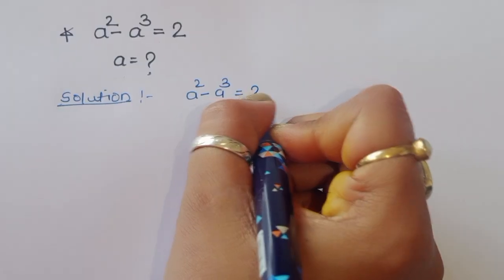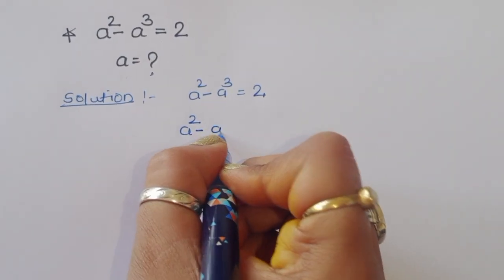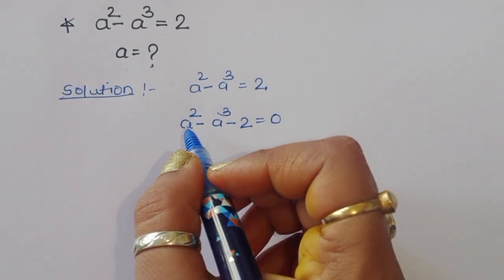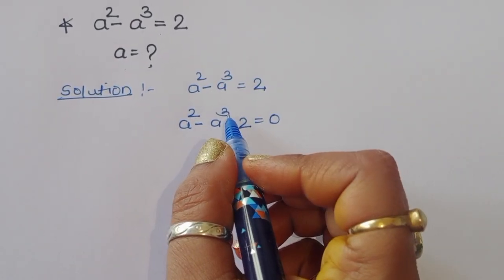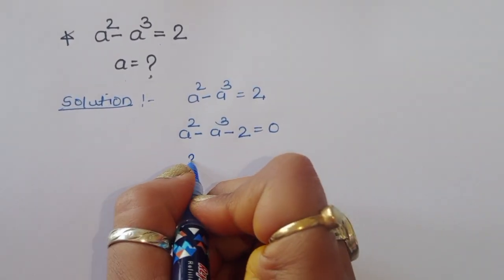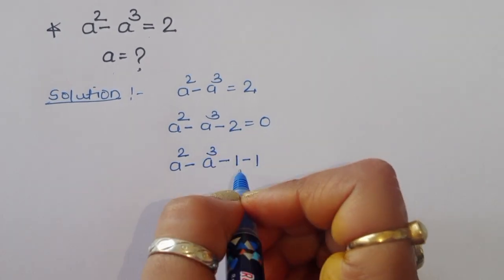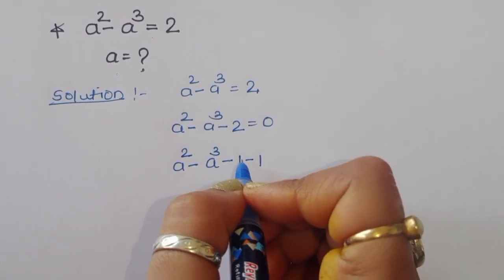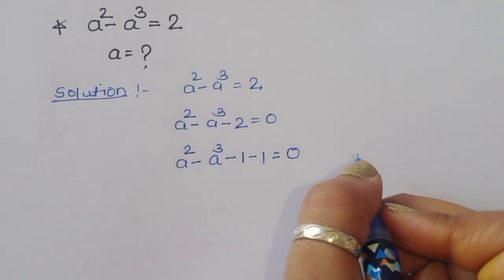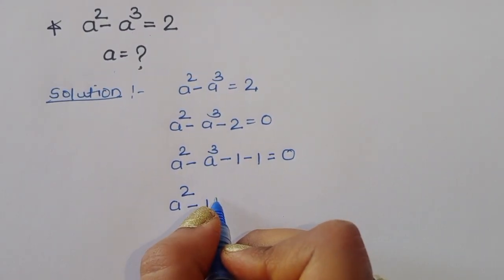So we have a squared minus a cubed equals 2, which we can write as a squared minus a cubed minus 2 equals 0. Now, since we have a square and a cube form, we can write 2 as 1 plus 1, so: a squared minus a cubed minus 1 minus 1 equals 0.